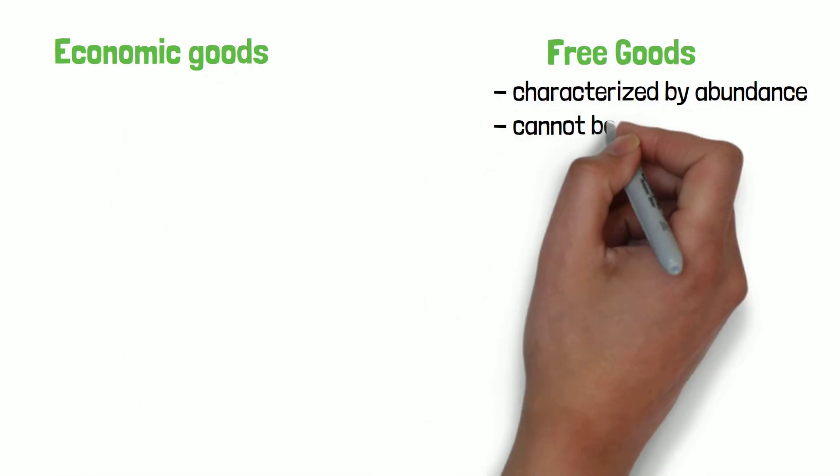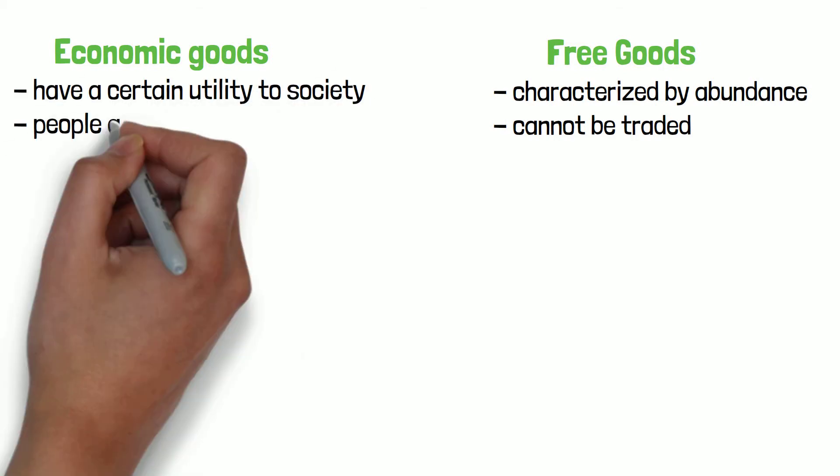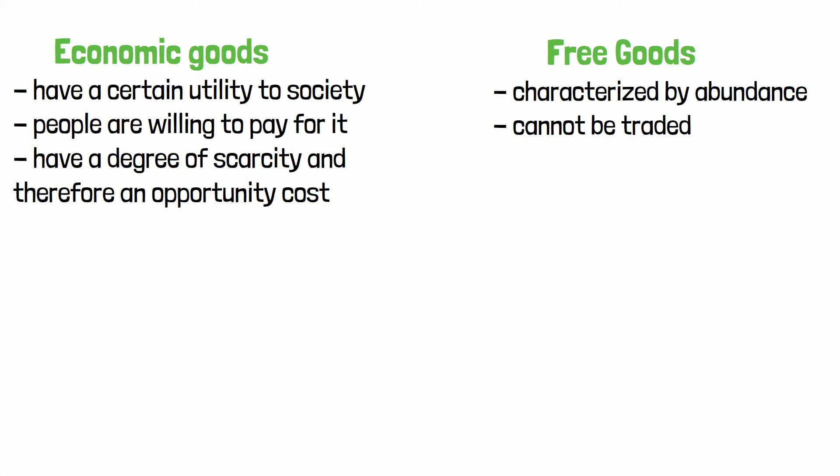A free good, like air or water, is characterized by abundance. Free goods cannot be traded, because nobody living by the beach would buy sand — there would be no point. An economic good is a good or service that has a certain utility to society and people are willing to pay for it. These goods have a degree of scarcity and therefore an opportunity cost.